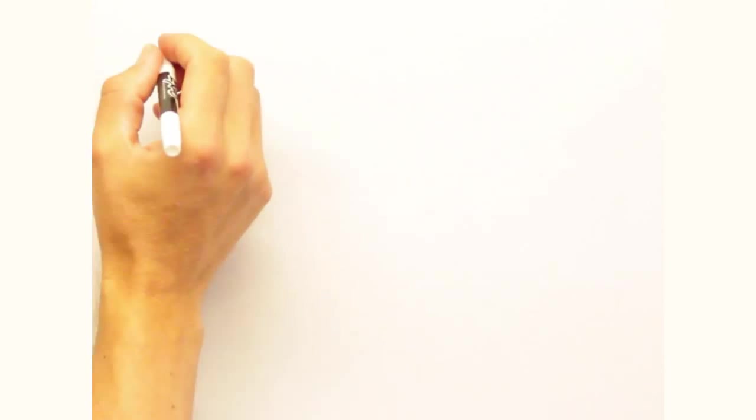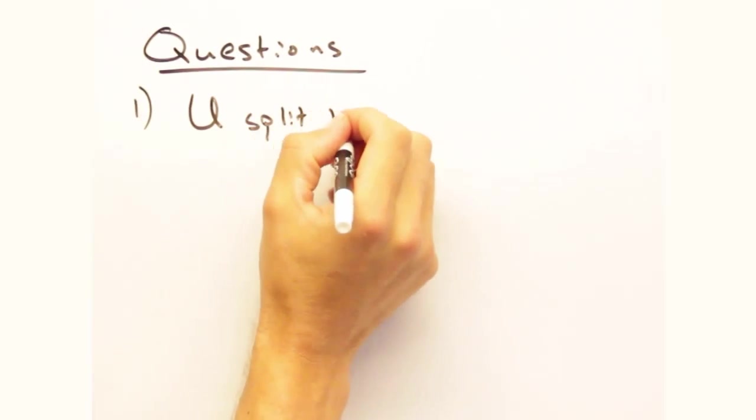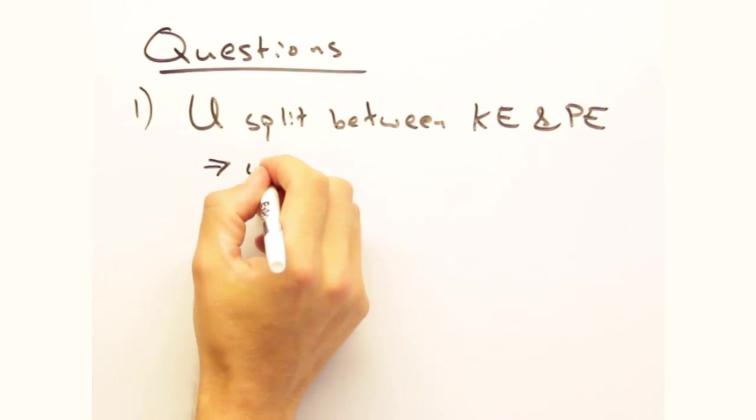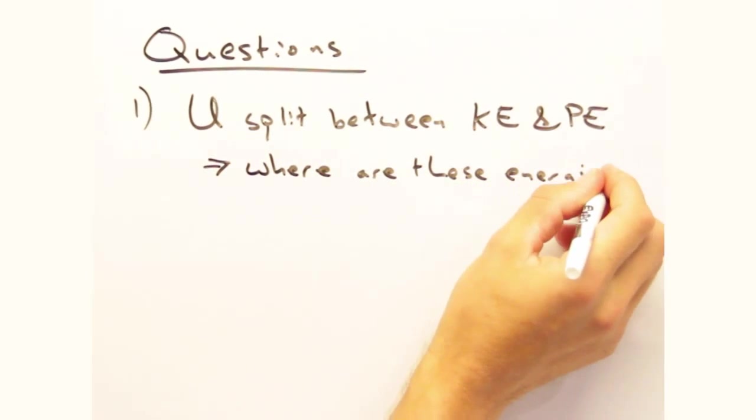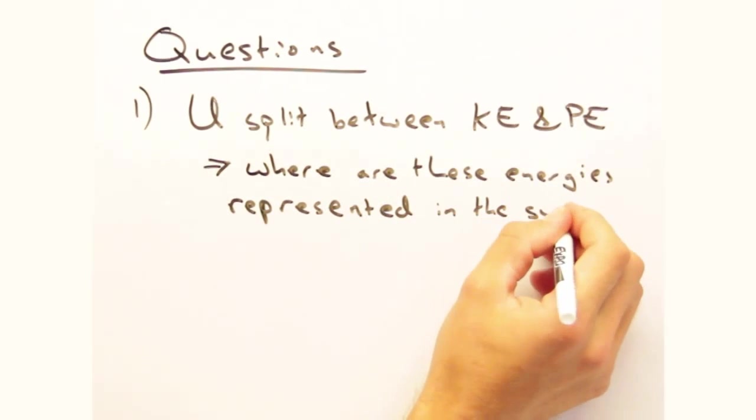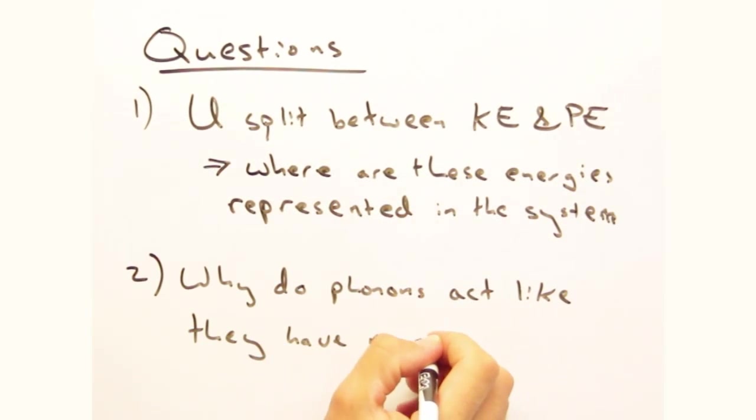Before we go, here are some questions for you to consider at home. First, I talked earlier about how for harmonic oscillators, the total u is split evenly between the kinetic energy and the potential energy of our system. Where are each of these energies represented? I also stated as a fact that phonons act like they have momentum when they interact with other particles. Physically, why are phonons able to do that?